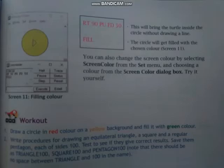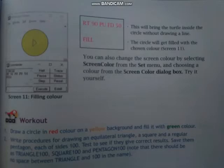The first workout is: draw a circle in red color on a yellow background and fill it with green color. It means यहाँ पर हमारा pen color होगा red, screen color होगा yellow, और हम उस circle में green color fill करेंगे। तो यहाँ पर आपको तीनों color set करने हैं — pen color, flood color, and screen color.